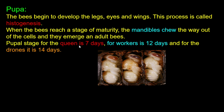The pupal stage for the queen is 7 days, the worker is 12 days, and the drone is 14 days.